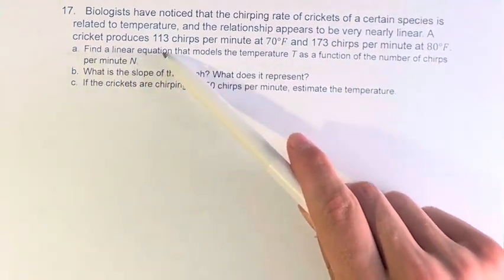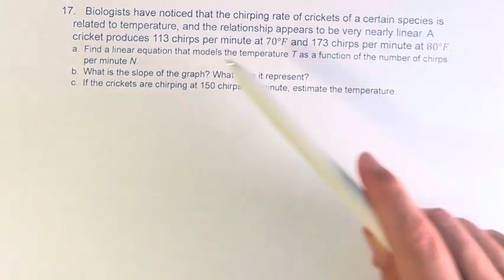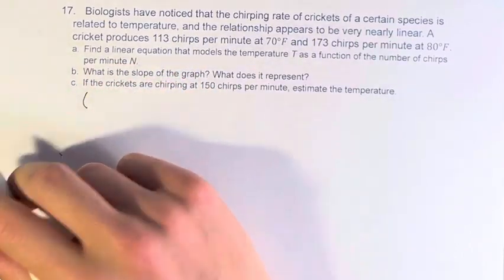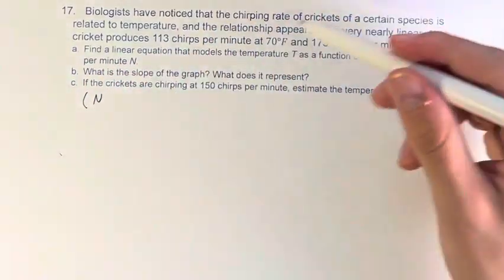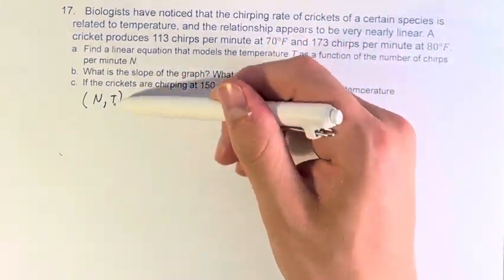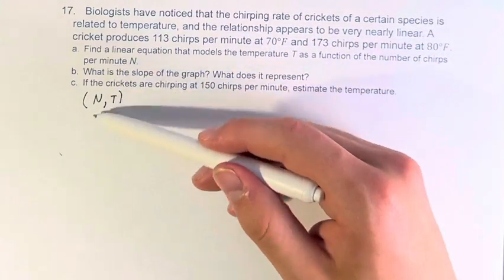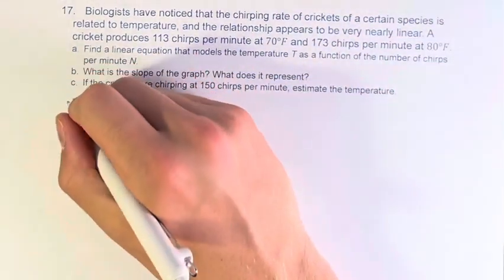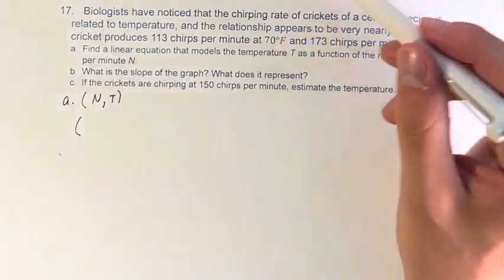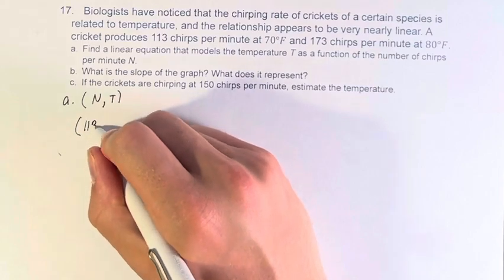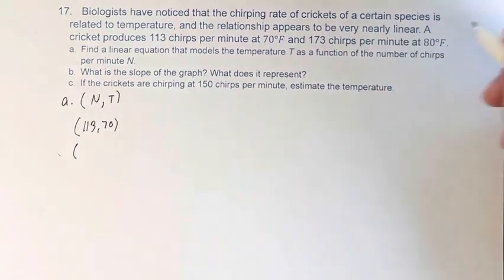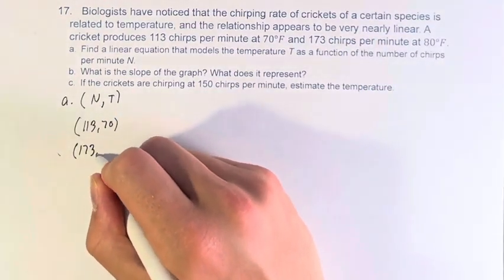First we're asked to find a linear equation that models the temperature T as a function of the number of chirps per minute N. So first let's get some points which are N number of chirps, T. T is the y variable here because it's in terms of N the x variable. So at 70 degrees Fahrenheit we have 113 chirps per minute, so that's (113, 70), and 173 chirps per minute at 80 degrees Fahrenheit, (173, 80).